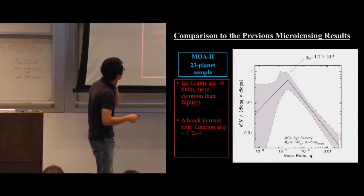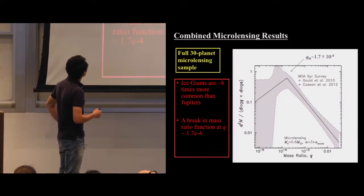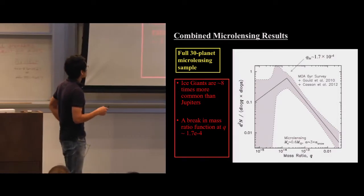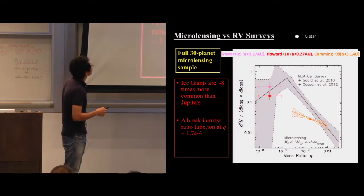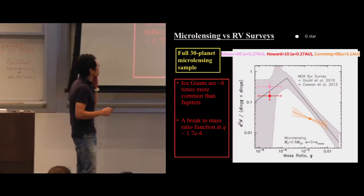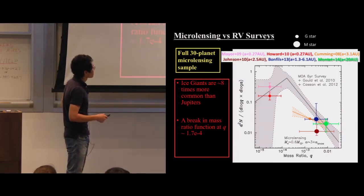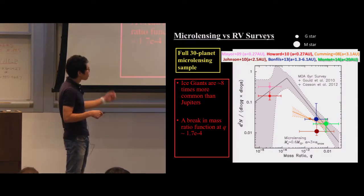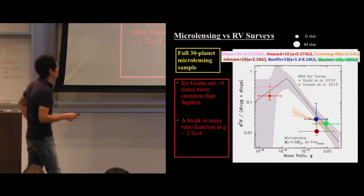Our mass ratio function is consistent with previous results from Gould et al. and Cassan et al. Combining all studies with 30 planets, we again find a broken power law with a similar break. Comparing with RV: standard RV surveys target G-star hosts and hot planets, making direct comparison difficult. However, RV results for M-star hosts and wide-orbit RV planets from Bonfils et al. and Montet et al. probe nearly the same parameter space as microlensing, and appear consistent with our result.